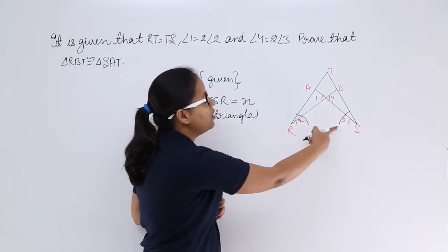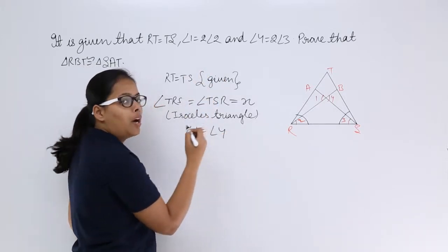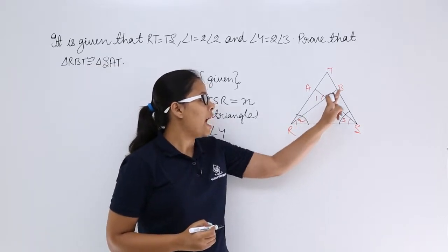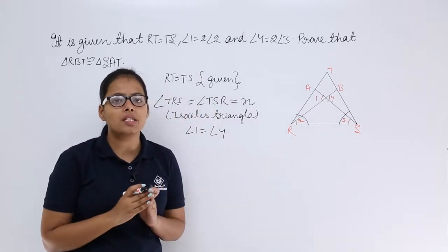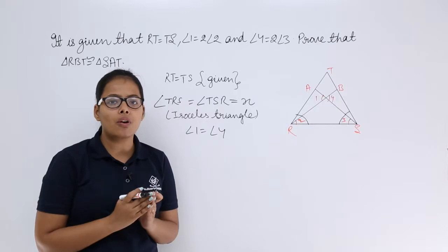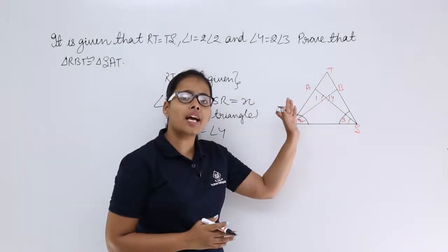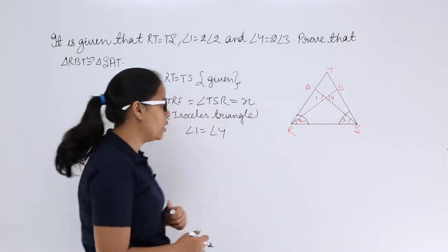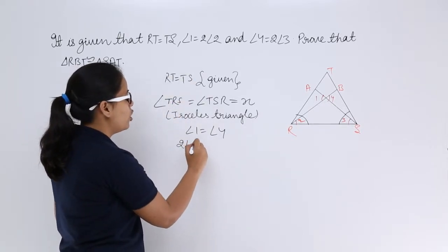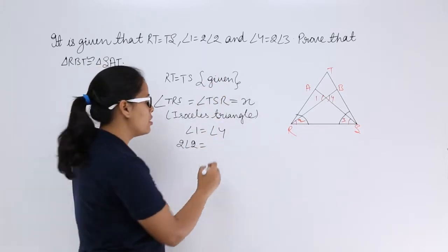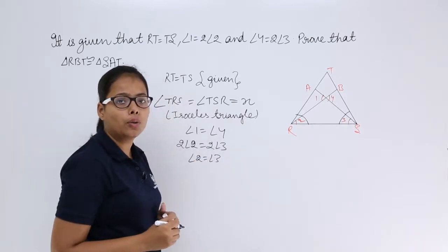Now you know that angle 1 is equal to angle 4. Why? Because you can see here these two lines are intersecting each other, and when two lines intersect their opposite angles are always equal — vertical angles. That's why angle 1 is equal to angle 4. You already know the value for angle 1 is twice of angle 2, and the value for angle 4 is twice of angle 3. From here you can write that angle 2 will be equal to angle 3.